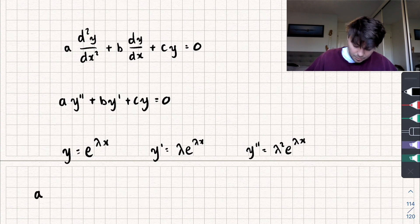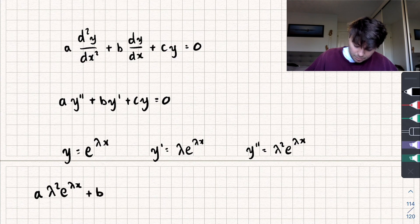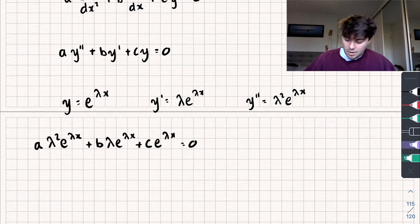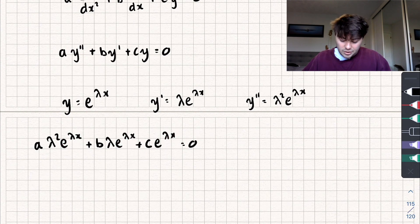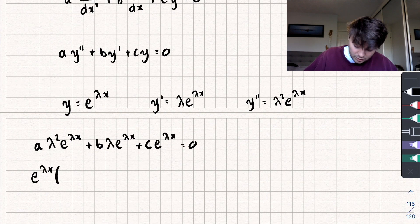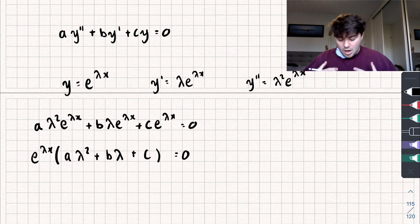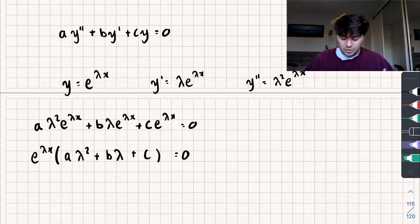Substituting in, we get: a·λ²e^(λx) + b·λe^(λx) + c·e^(λx) = 0. Each term has an e^(λx) in it, so we can factor that out and get e^(λx) · (aλ² + bλ + c) = 0.